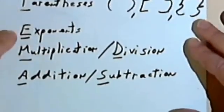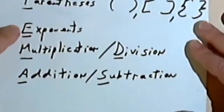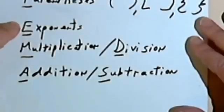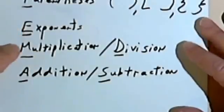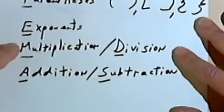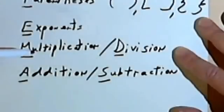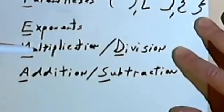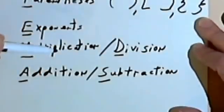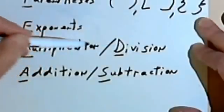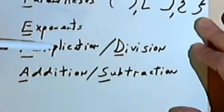After we do parentheses, we go on and deal with exponents. After exponents, we do multiplication and division. Multiplication and division are at more or less the same level — it doesn't matter if we do multiplication first or division first, but the important rule is that we work from left to right. Whatever order going from left to right we see the multiplication and the division in, that's the order we do them in.